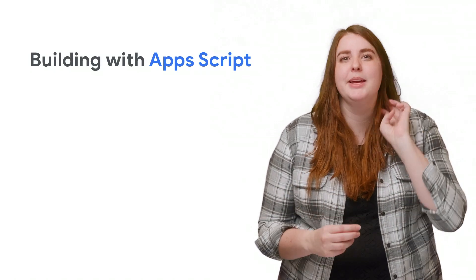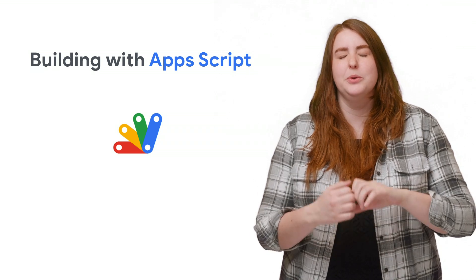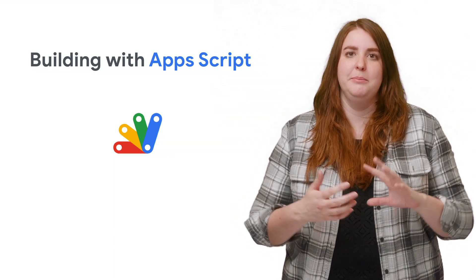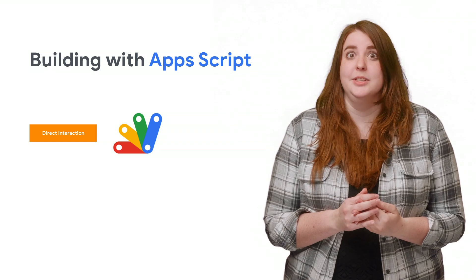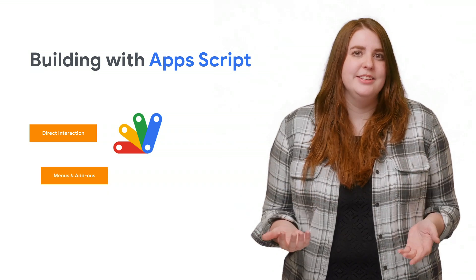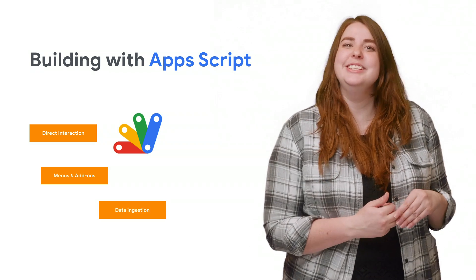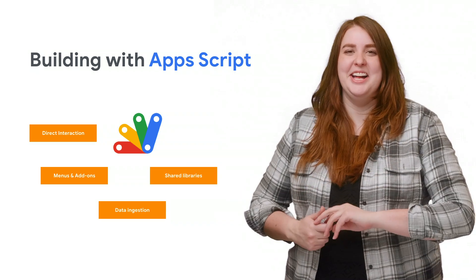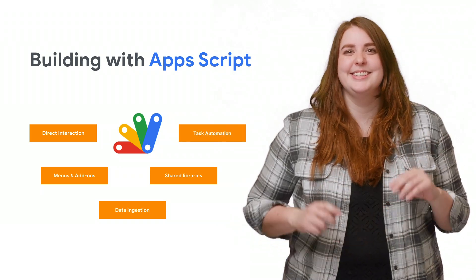Apps Script is a JavaScript-based scripting environment that lives inside of G Suite and offers you a number of abilities: things like interacting directly with your Docs, Sheets, or Slides, adding new custom menus, sidebars, and add-ons, reading data from outside sources to augment your project, providing a library for new functionality shared on your team, or even automating tasks so you don't have to click so many buttons every time.